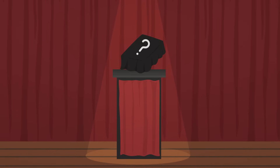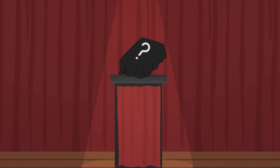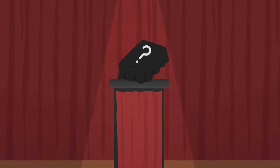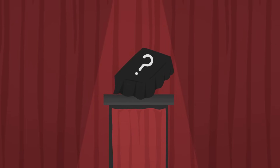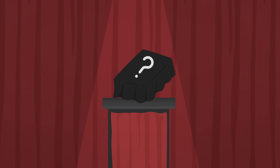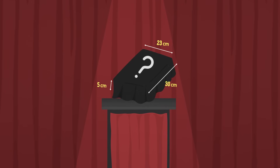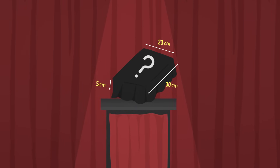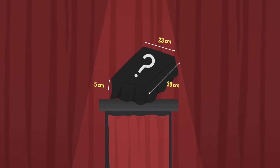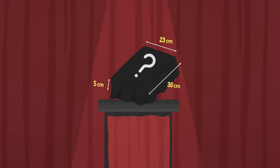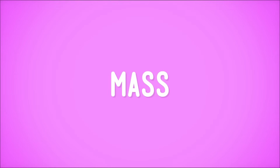Okay, now back to this mystery object. Feeling around, it's got nice straight sides, and two sides are larger than the other two. That means we're dealing with a rectangle here. Now let's give those sides a measure. Looks like it's about 23 centimeters wide, about 30 centimeters tall, and about 5 centimeters high. So we have some measurements. That's a good start, but it's not enough to tell us what this thing is. So let's measure another property.